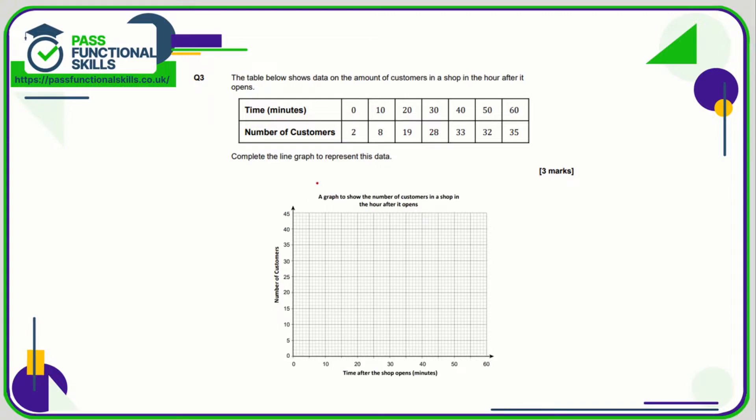So we need to do a line graph for this data. Time in minutes is along the bottom, number of customers up the side. So first coordinate is 0, 2 - so 0 across and 2 up. We're going up in ones so that's going to be there. 10, 8 - there's 10, go up to 8. 20, 19 - across to 20, up to 19.